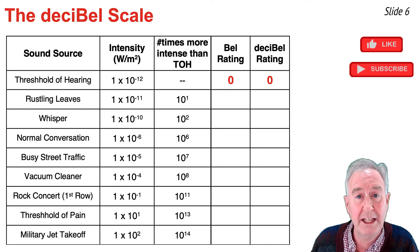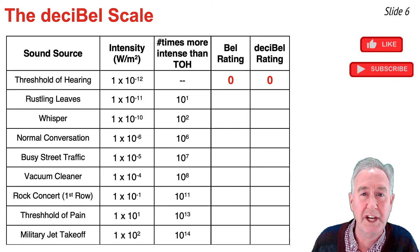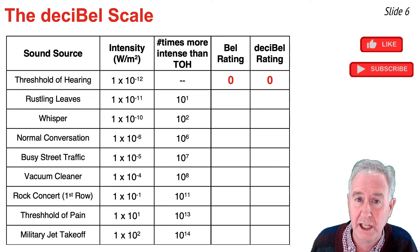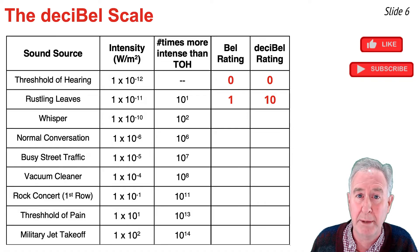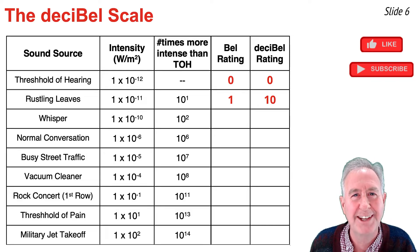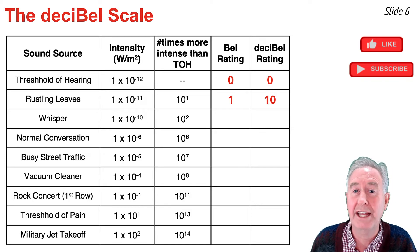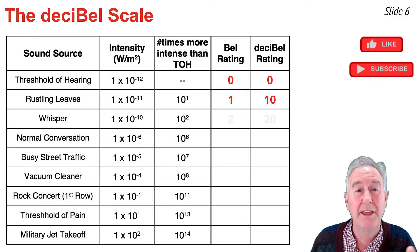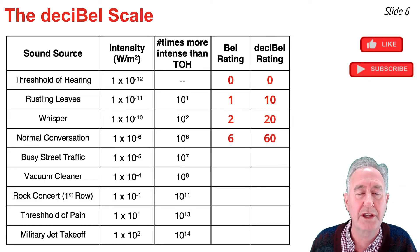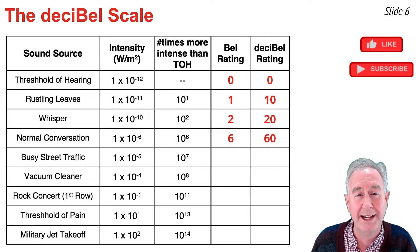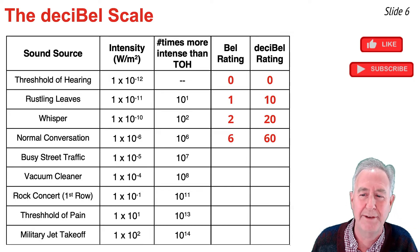Rustling leaves is 10¹ times more intense than the threshold of hearing. Capturing the exponent of 10 gives a bell rating of 1, and since a decibel is one-tenth of a bell, the decibel rating is 10. A whisper is 10² times more intense: bell rating 2, decibel rating 20. Normal conversation is 10⁶ times more intense: bell rating 6, decibel rating 60. Busy street traffic is 10⁷ times more intense: bell rating 7, decibel rating 70 decibels.